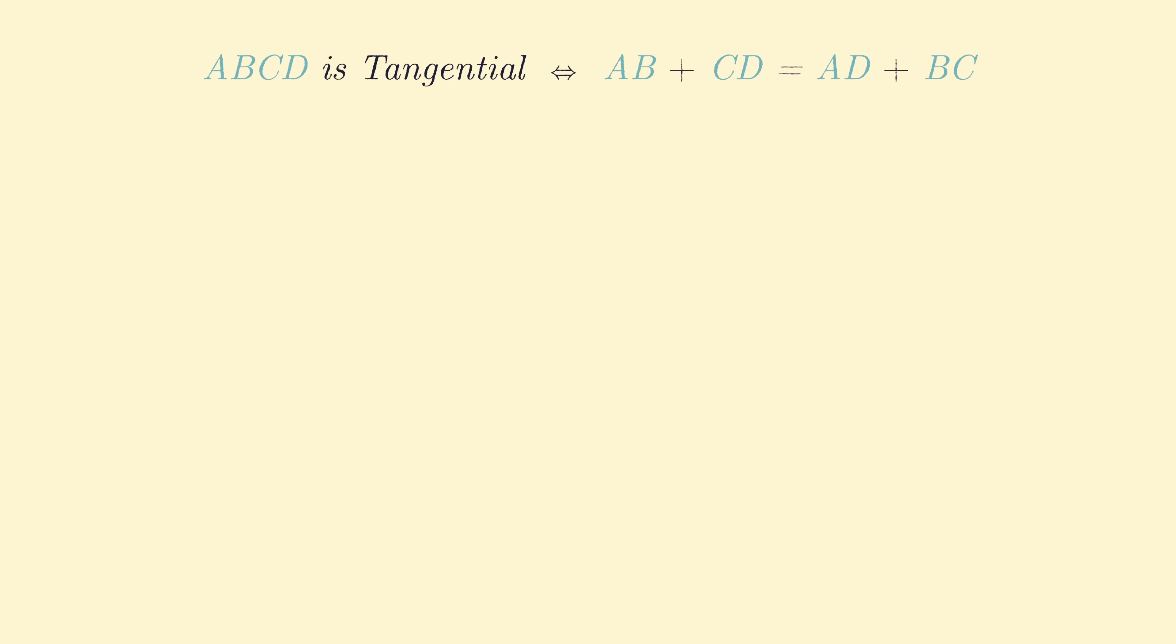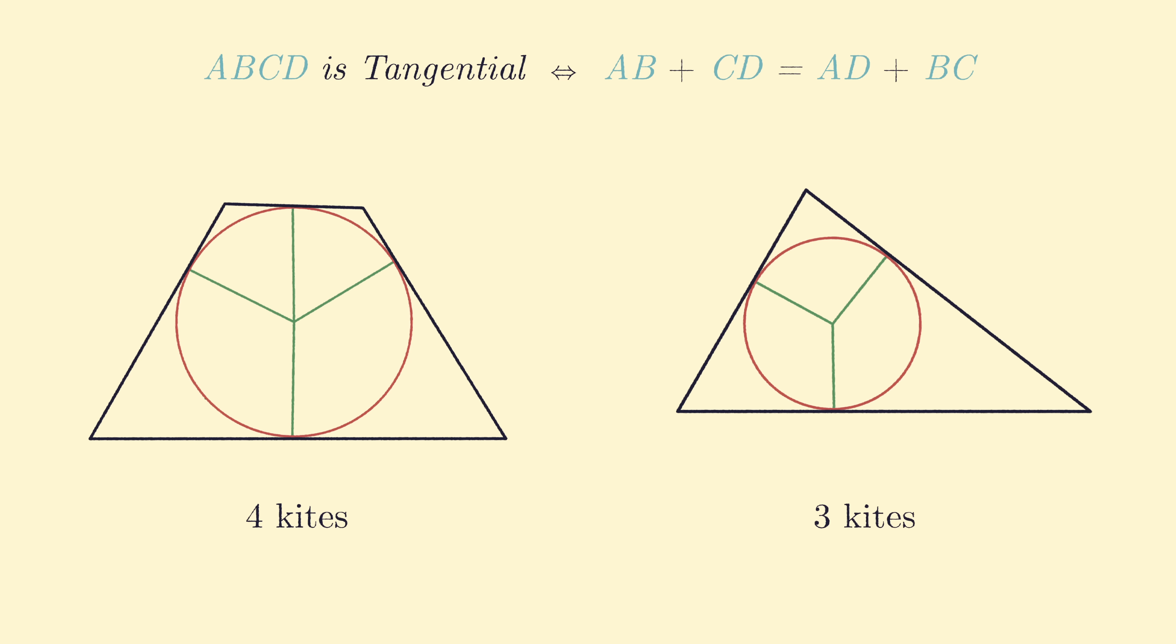Returning to the original problem, now we know a tangential n-gon can be split into n kites using its in-circle. We also know that a tangential quadrilateral can be split into four kites, and any triangle can be split into three kites. And it just so happens that 4 plus 3 is 7. Isn't it wonderful when everything just works out?